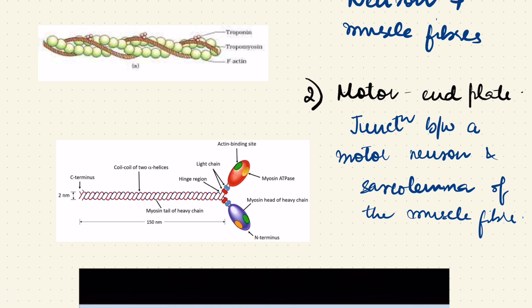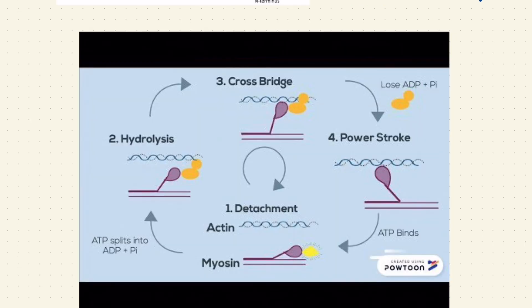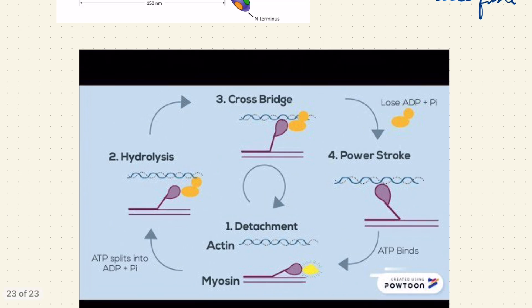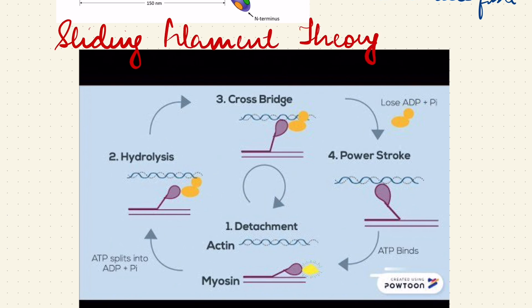There should be no confusion whatsoever. A motor unit is a neuron along with the muscle fibers that it supplies, whereas the motor end plate is just the junction between the motor neuron and the membrane of the muscle fiber, or the sarcolemma of the muscle fiber. Now we'll study here about the mechanism of muscle contraction, which happens by the sliding filament theory. The name is sliding filament theory, and every year at least one question is being asked from this theory, so it is very important. Don't miss it.